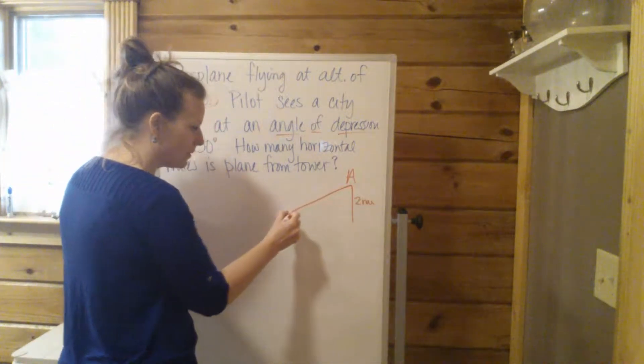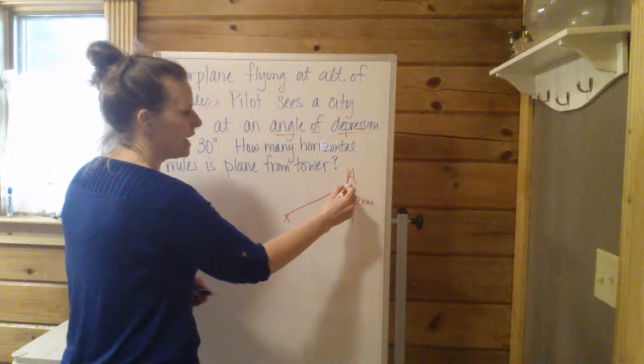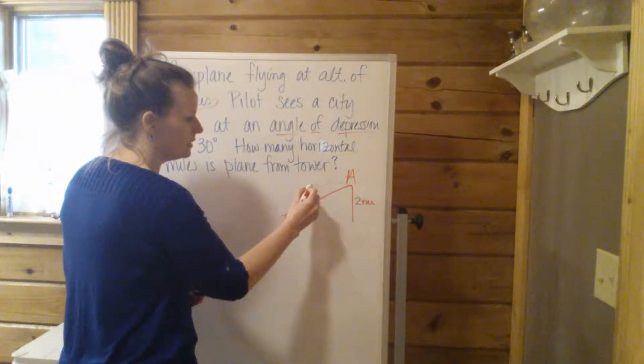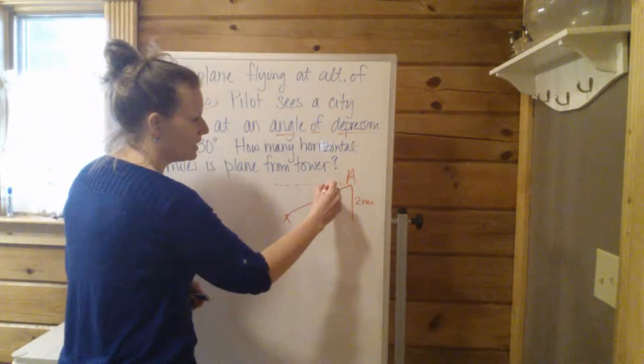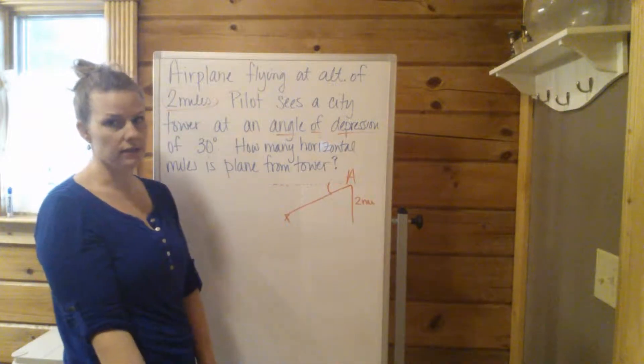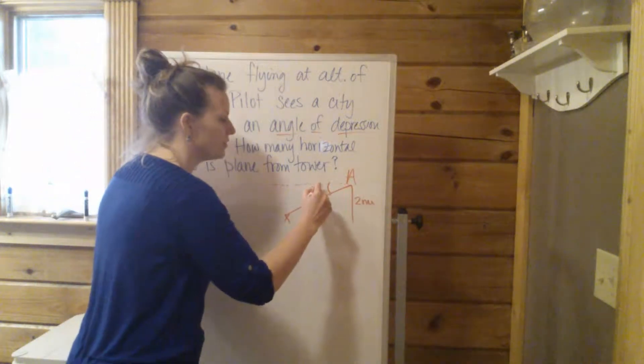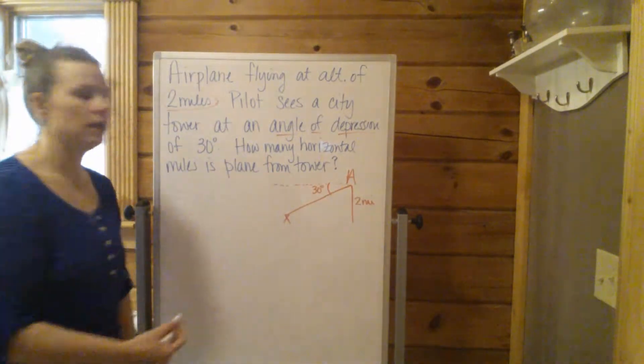The pilot sees the tower down here. The angle of depression is made with this horizontal line. So this is your 30 degrees in this diagram.